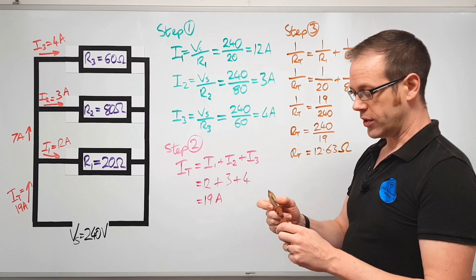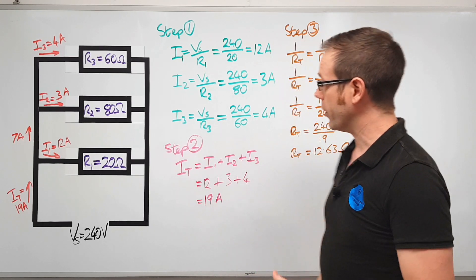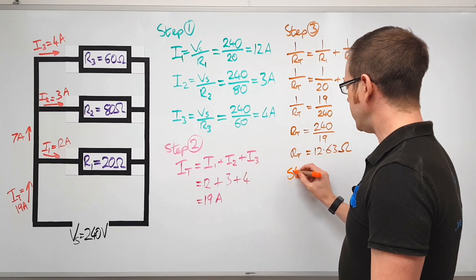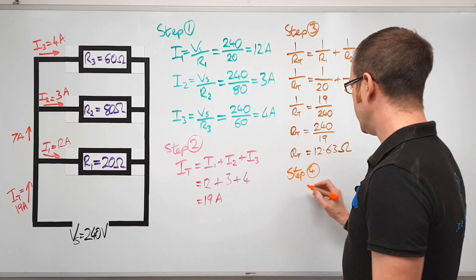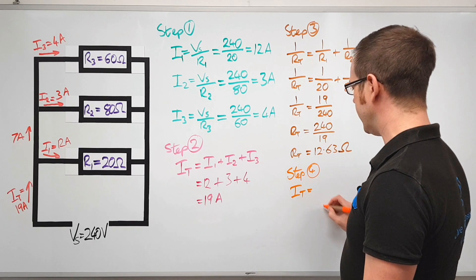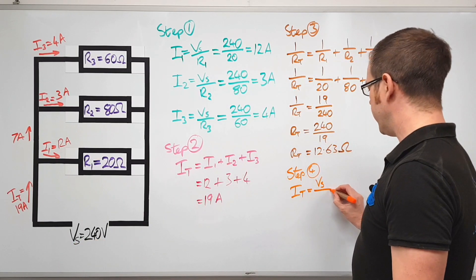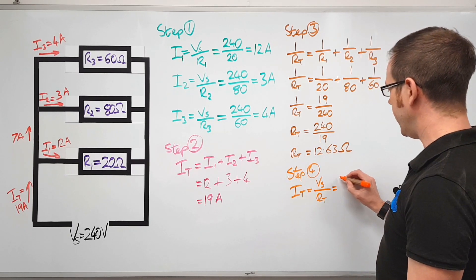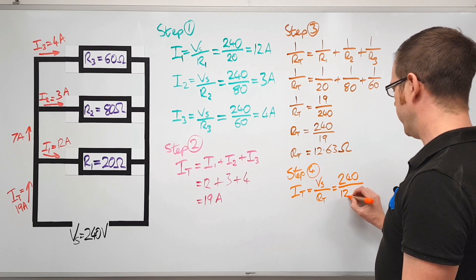And then finally we move on to step four, and this is kind of where the magic happens. For step four we're going to figure out the total current flow again. So we figured it out here, it was 19 amps, so we're going to now say that the total current flowing into the circuit, we're just going to find it a slightly different way. We're going to say that the total current will be equal to the supply voltage, the voltage that we've applied to the circuit, divided by the total resistance. And of course we calculated the total resistance here, so we end up with 240 volts divided by 12.63.